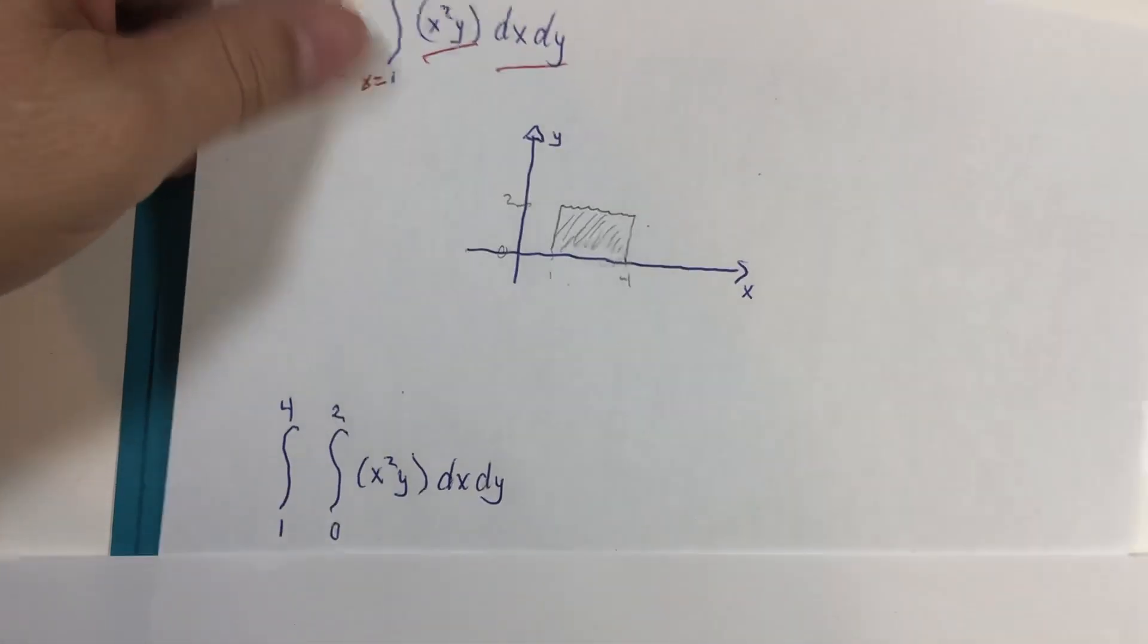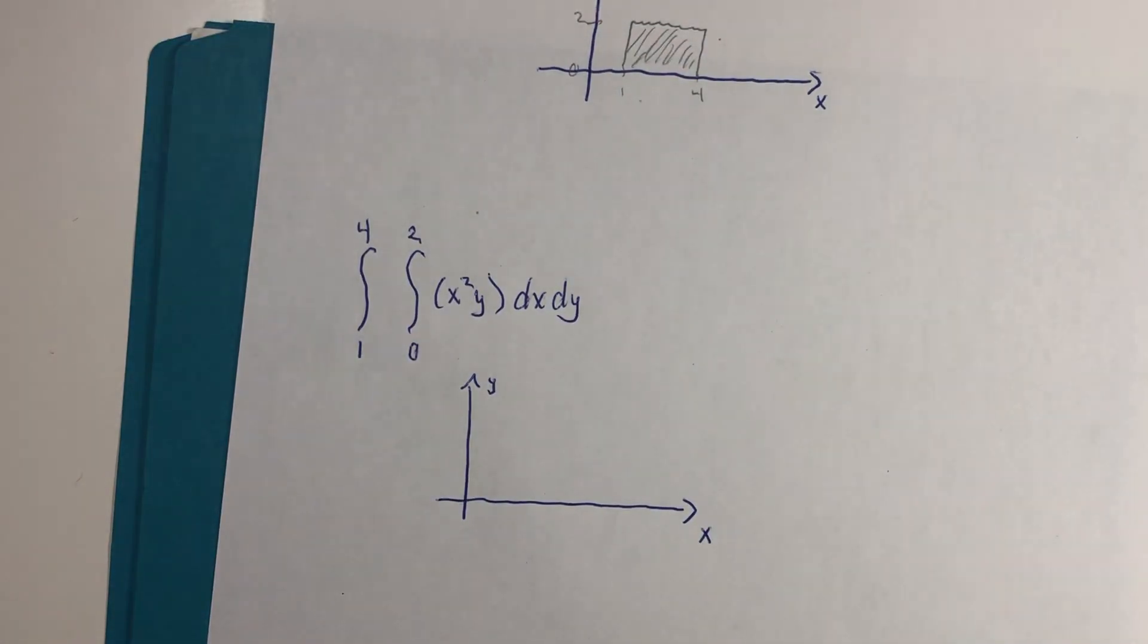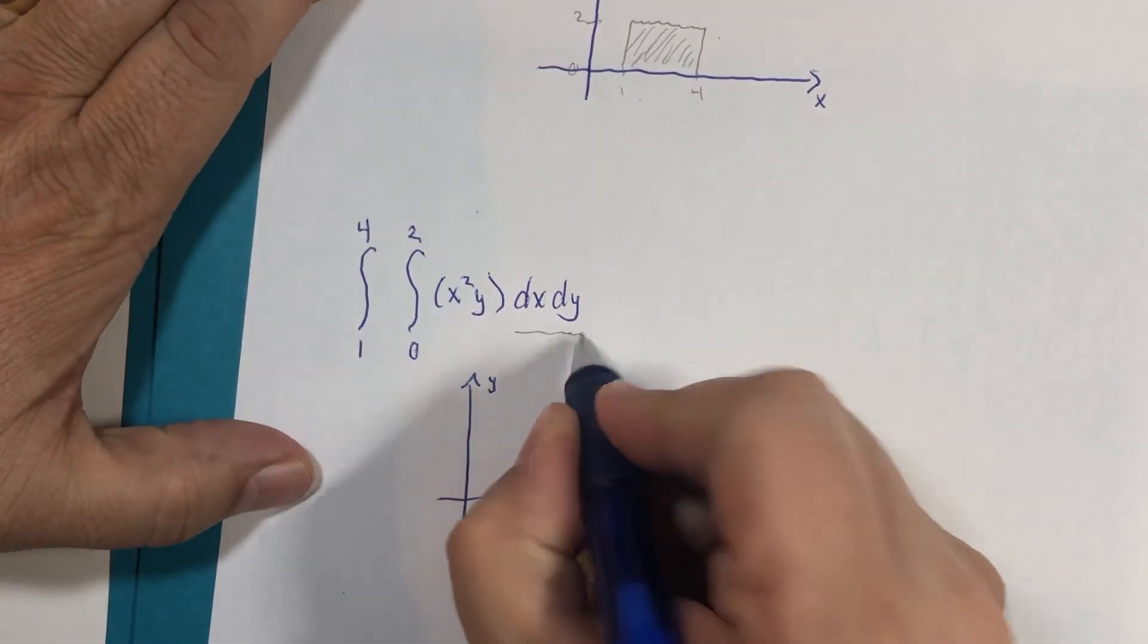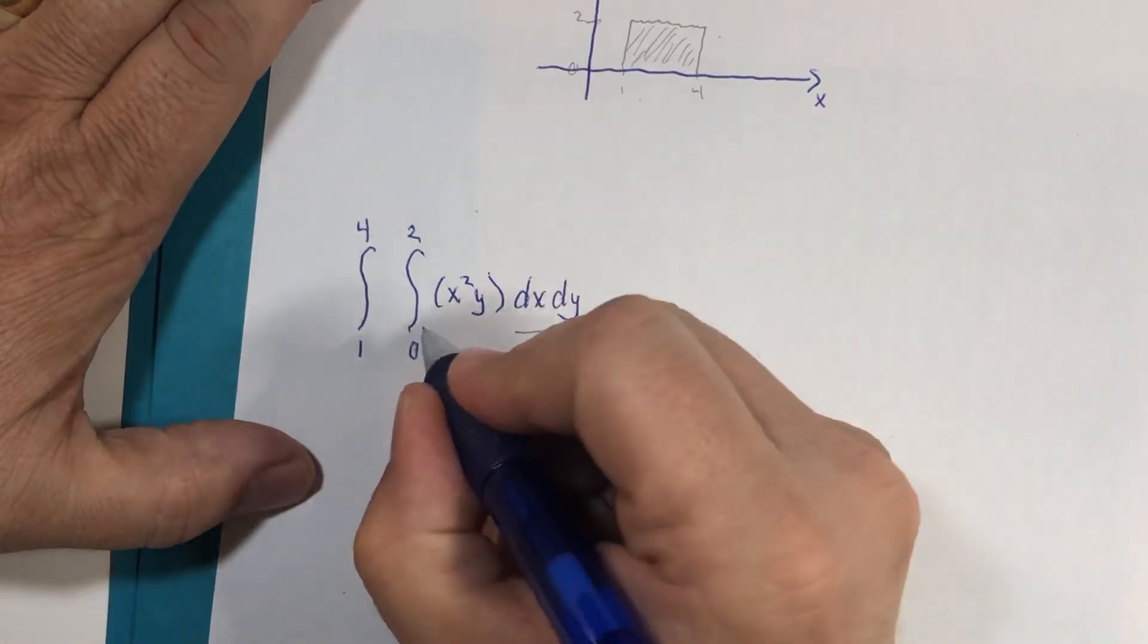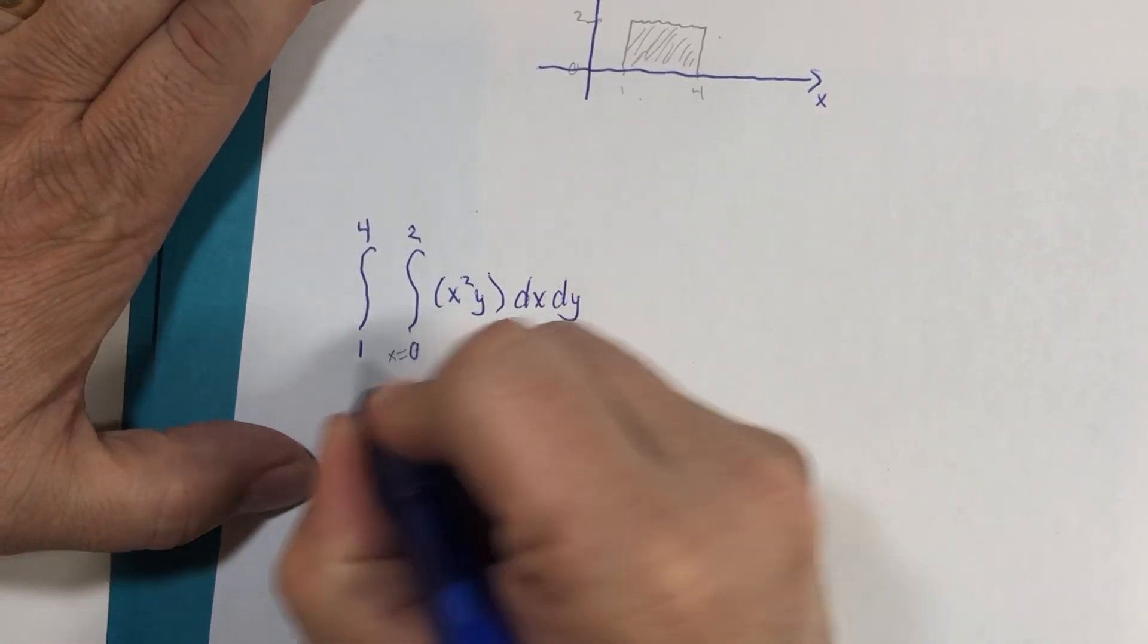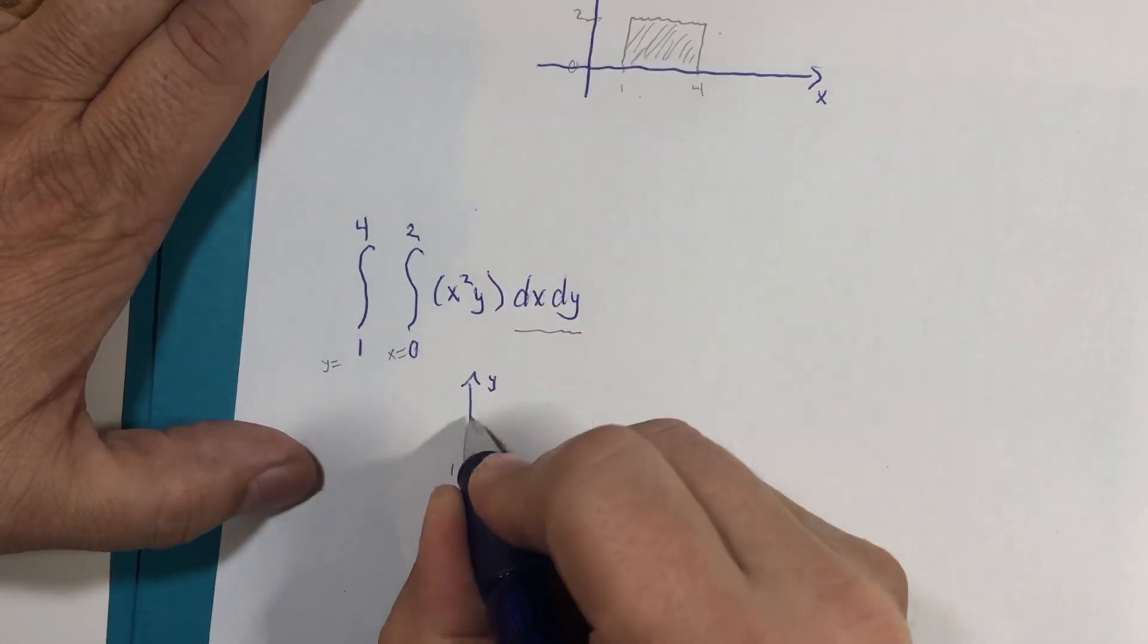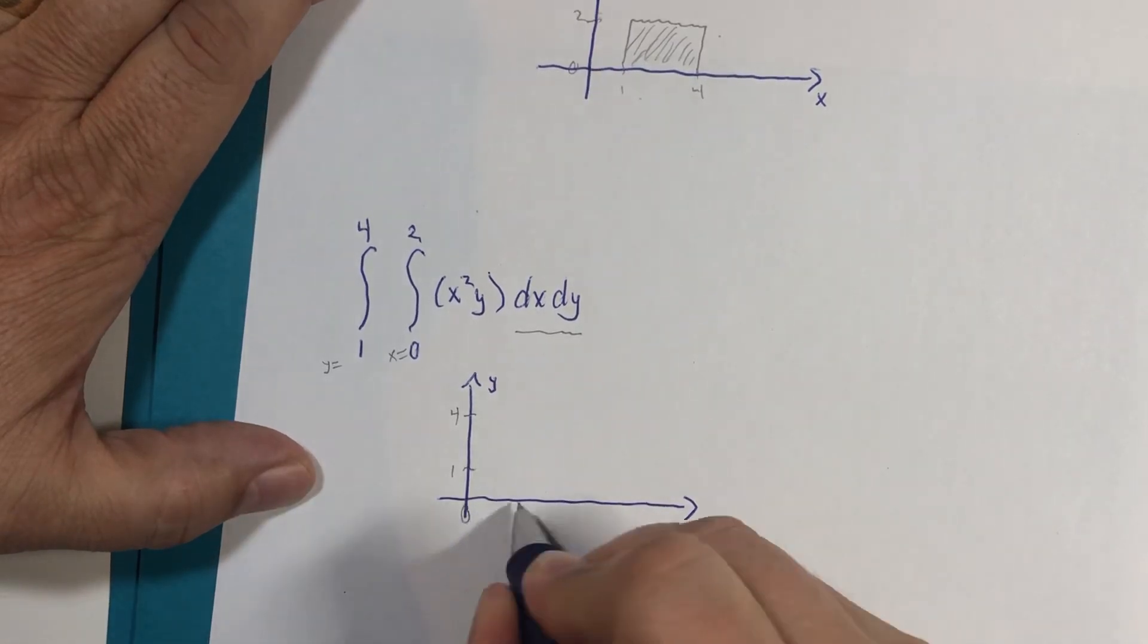Finally, we had a third problem that we looked at. And in this problem, we had switched not only the order of the integration, but these limits or boundaries also switched. So this is now x and this is now y. And y goes from 1 to 4. And x goes from 0 to 2.